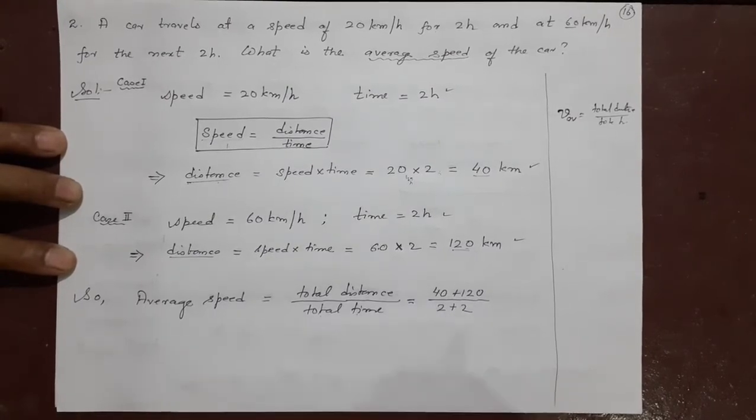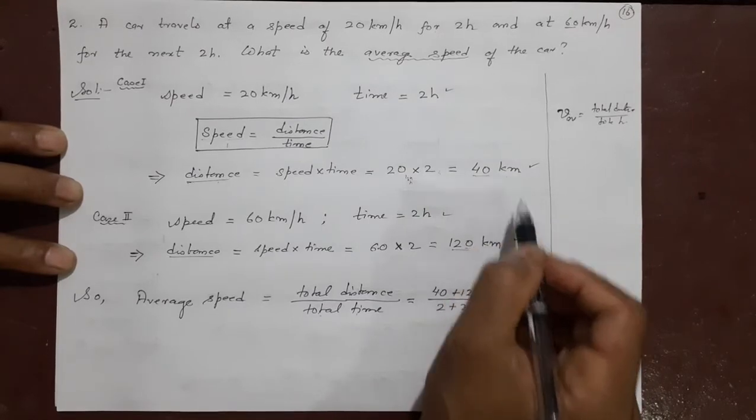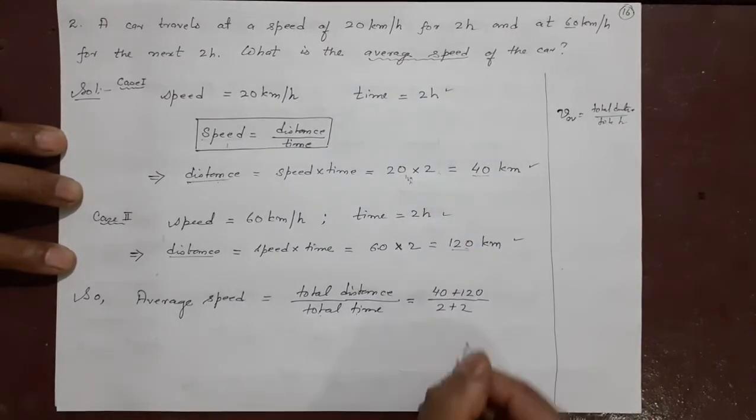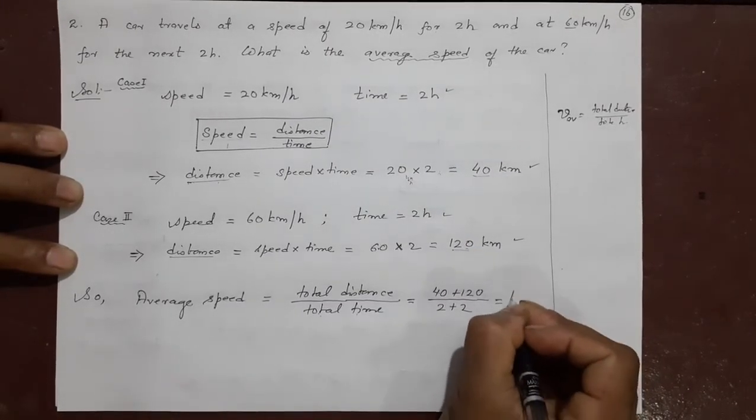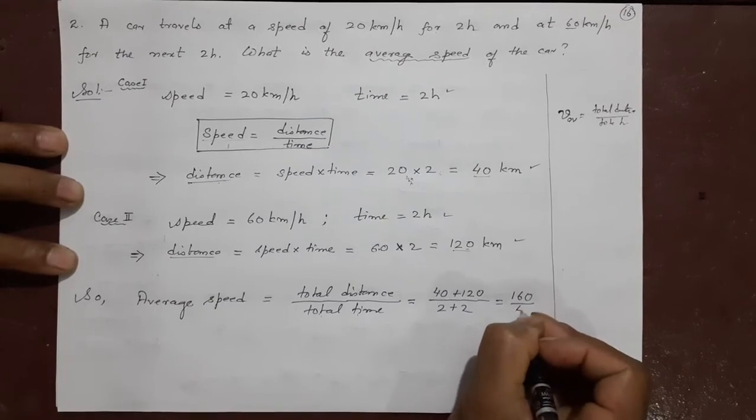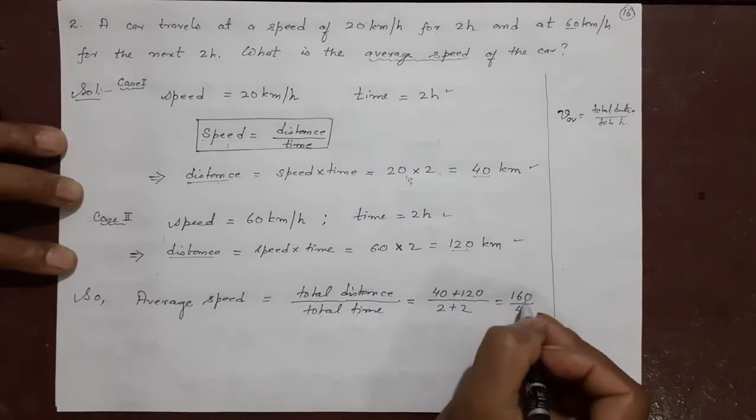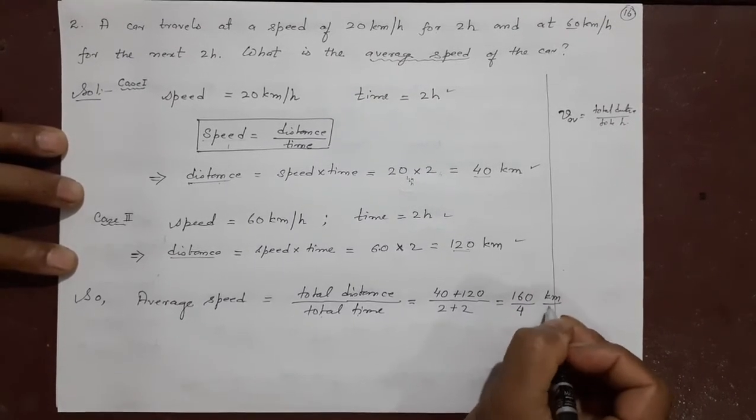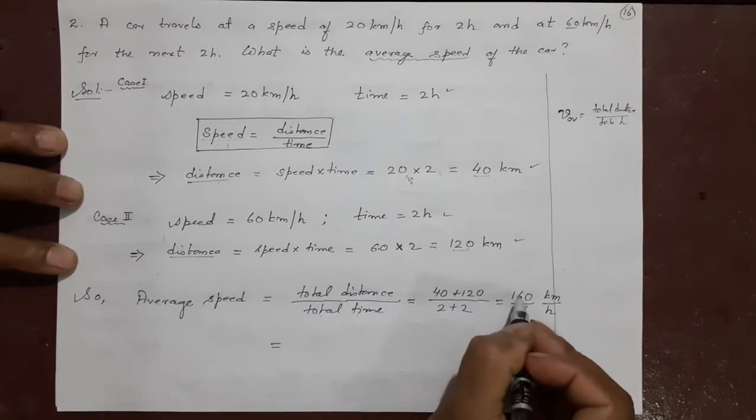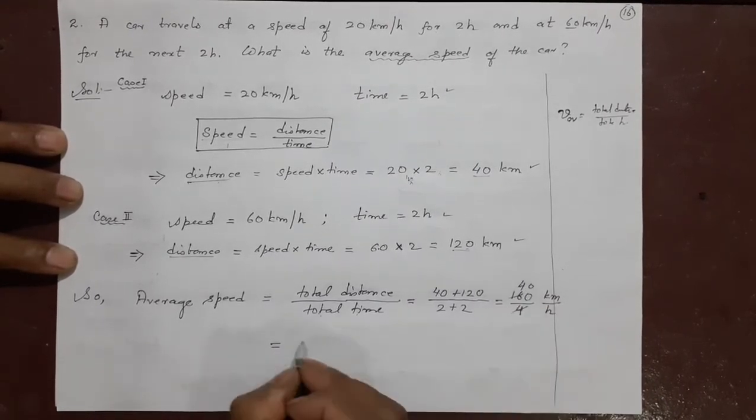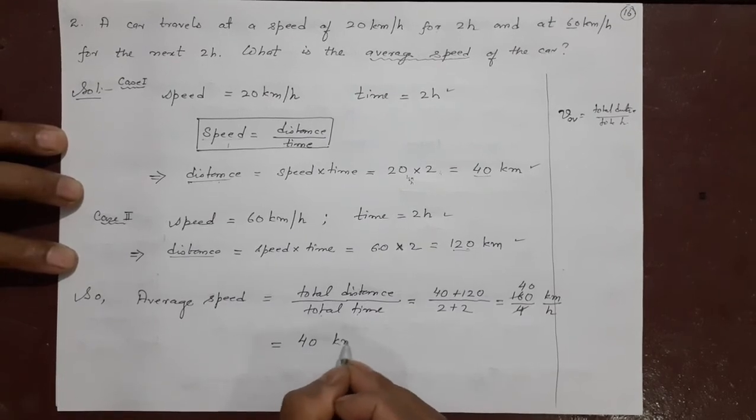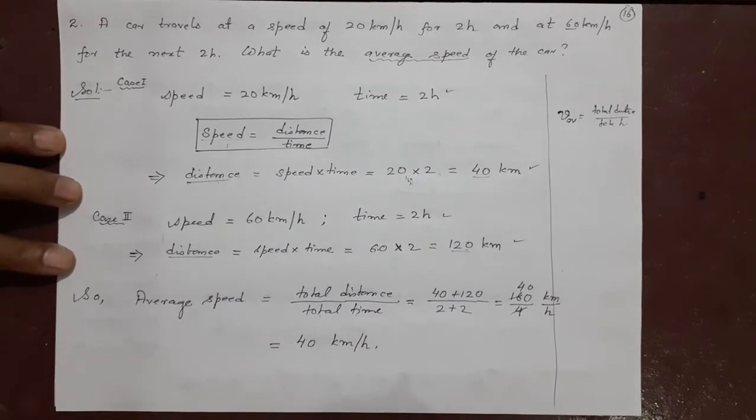Total distance was not there. That is why we were finding it separately. So what is this going to give me? 160 by 4. Remember this is kilometer. This is h. So when you cancel them, 4 into 60, it will give me 40 kilometer per hour is your answer.